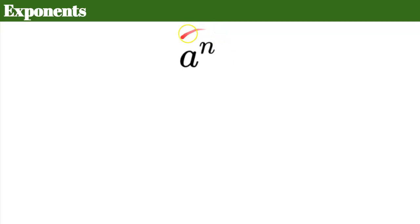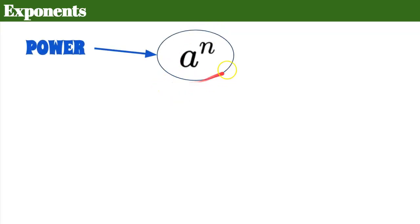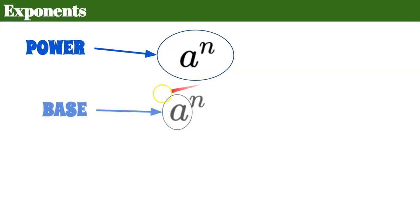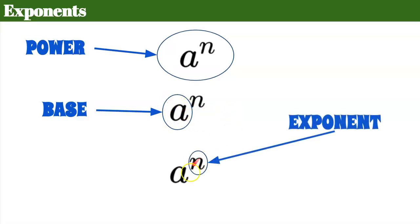Now let's talk about exponents. The entire expression a to the n is called a power — I like to say it's powerful because it represents a much larger number. The base of this power is a, and n represents the exponent. So this entire expression isn't just an exponent — it's a power, made up of a base and an exponent.